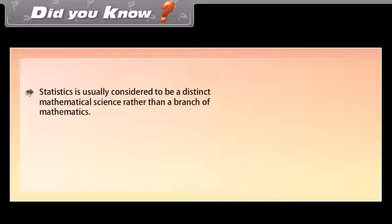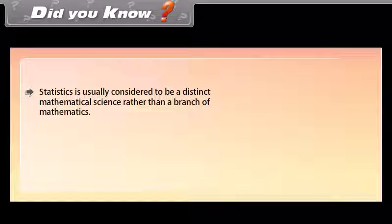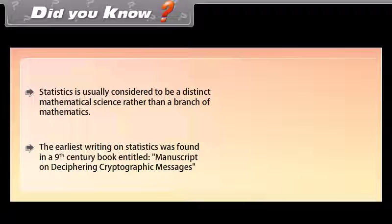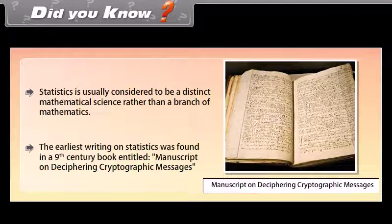Did you know? Statistics is usually considered to be a distinct mathematical science rather than a branch of mathematics. The earliest writing on statistics was found in a 9th century book entitled 'Manuscript on Deciphering Cryptographic Messages.'